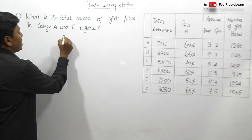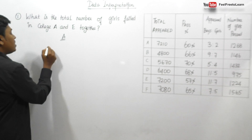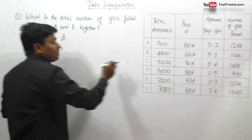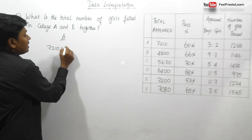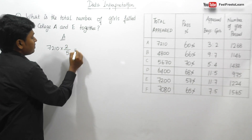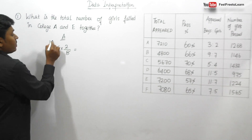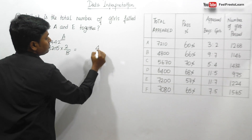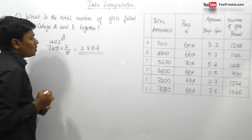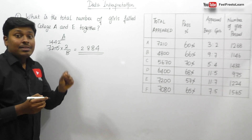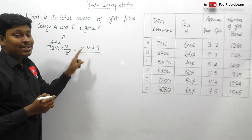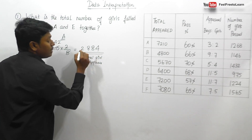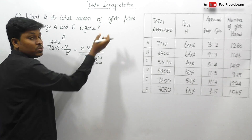First of all, let me take college A. The total number of students is 7210. Out of this total, boys and girls are in a ratio of 3:2. So girls are 2 parts out of a total ratio of 5. So girls appeared = (2/5) × 7210 = 2884. In college A, the total girls who appeared is 2884.